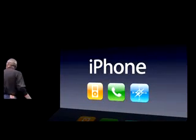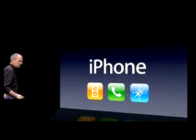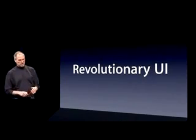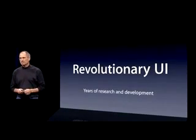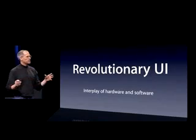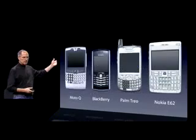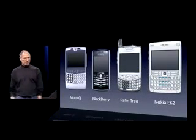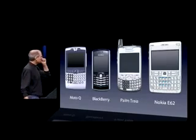We're going to start with a revolutionary user interface — the result of years of research and development and an interplay of hardware and software. Why do we need a revolutionary user interface? Here are four smartphones: the Motorola Q, the BlackBerry, the Palm Treo, and the Nokia E62 — the usual suspects. What's wrong with their user interfaces?